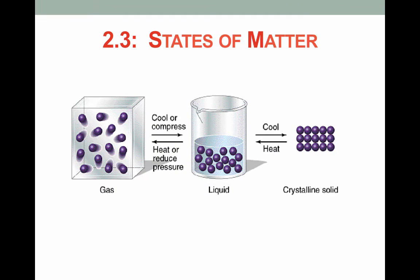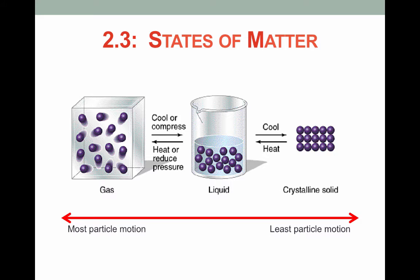So summarizing what we just saw, gases have the most particle motion, whereas solids have the least particle motion. Gases are the least orderly, whereas solids are the most orderly. And gases have the weakest attractions, while solids have the strongest attractions.